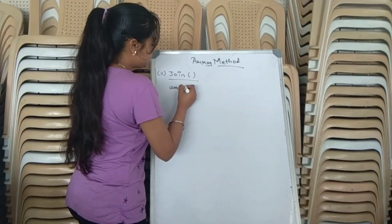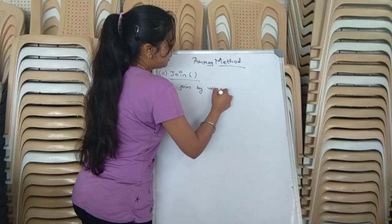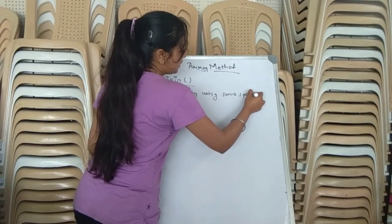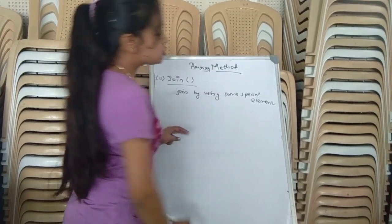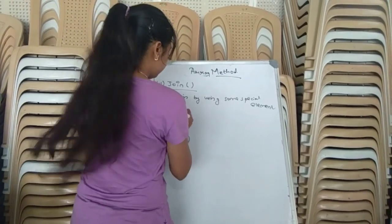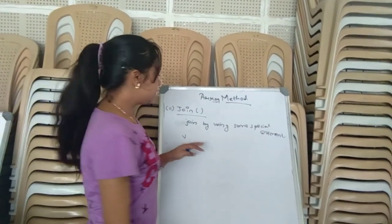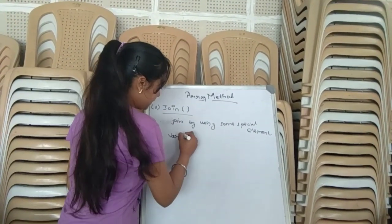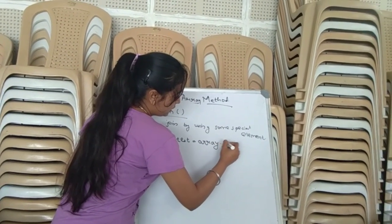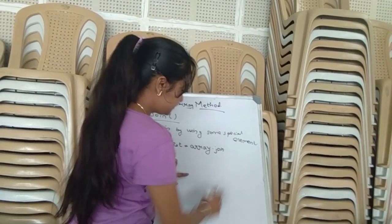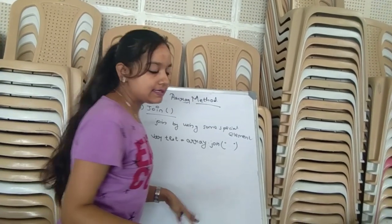This method will join elements by using some special character. So let us see the syntax. We will write where s equals to Array.join, then we will write the special character. So this was the syntax of Join Method.